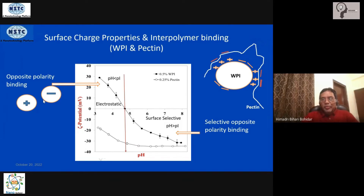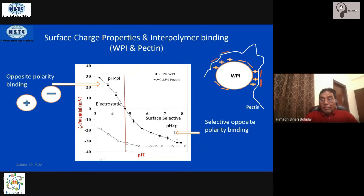The second part of the story is what happens when the pH is above the isoelectric point. Even then, binding still takes place regardless of the fact that the net charge on the protein and pectin are the same — both are negatively charged. The net charge is the same, yet they will still bind. The mechanism for this is called surface selective patch binding.